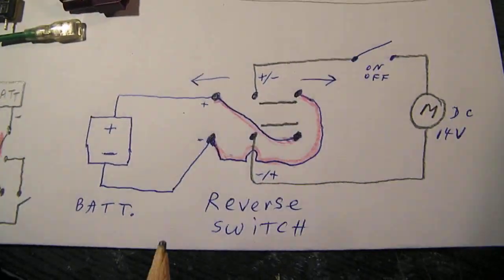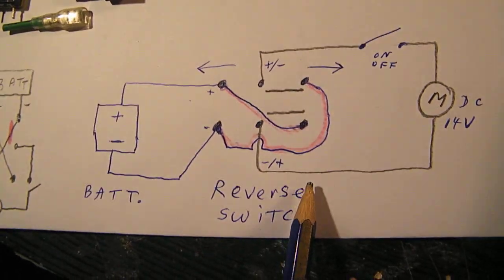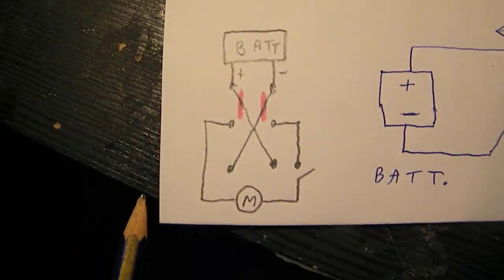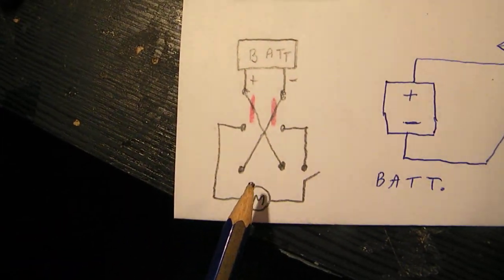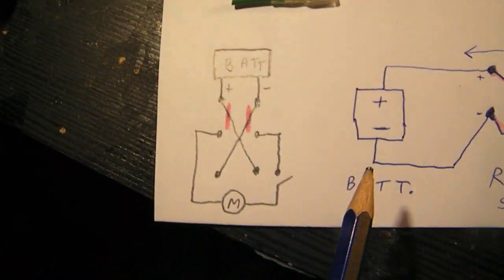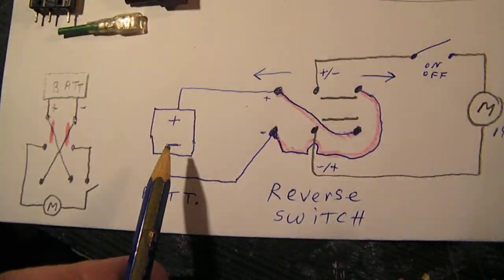Here is that reverse switch. This is one schematic, and here's the other one. Exactly the same circuit. But perhaps this says more about how that switch must be connected. Positive, negative on the battery.